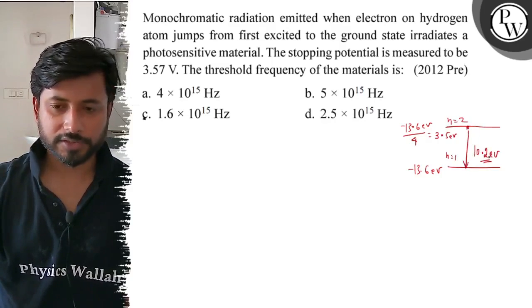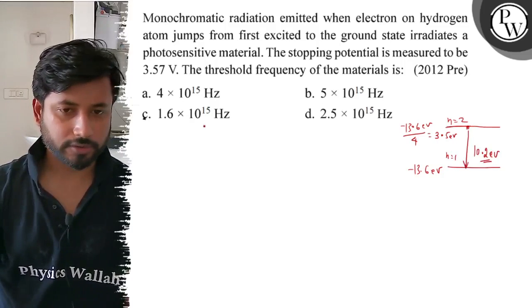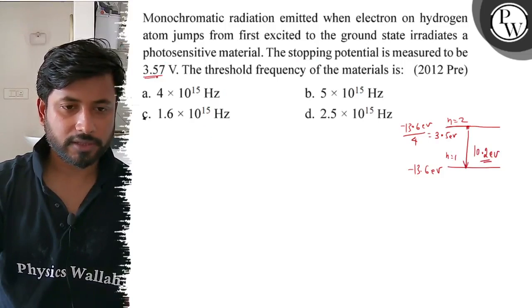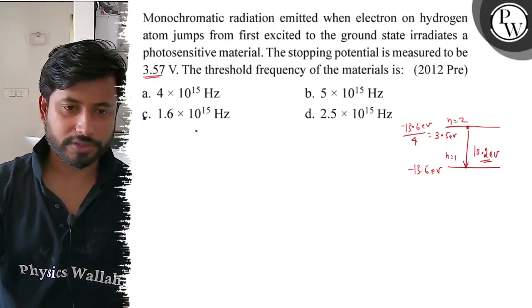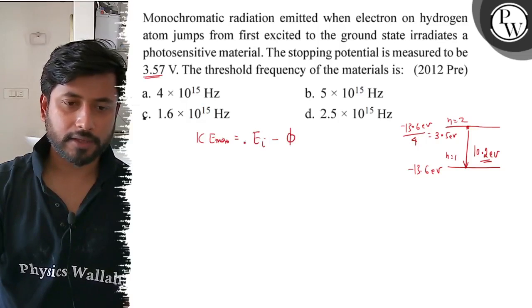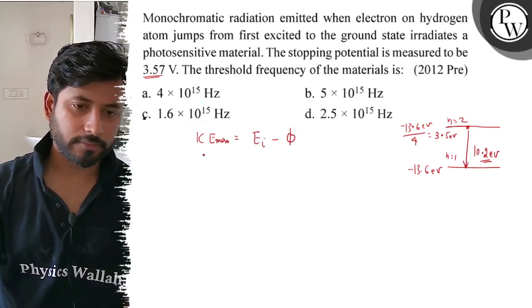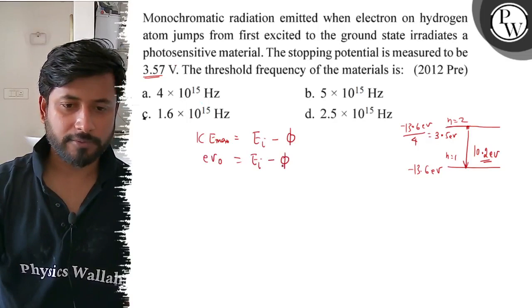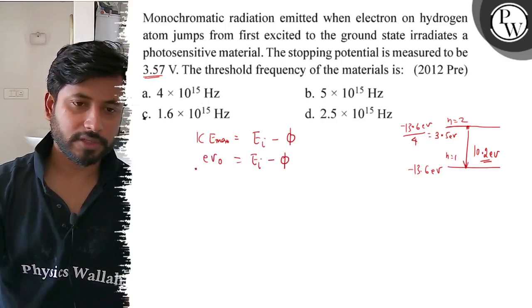This transition energy released is 10.2 electron volt. The stopping potential of the material is given as 3.57 electron volt. The equation is K_max equals E_i minus φ. Maximum kinetic energy equals eV_0. eV_0 equals E_i minus φ.